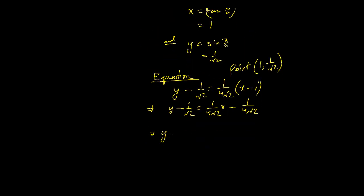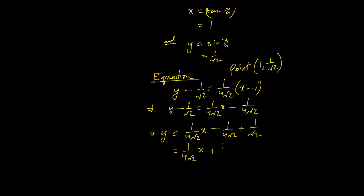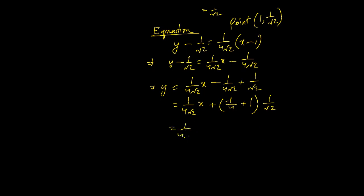So y = (1/(4√2))x − 1/(4√2) + 1/√2. These calculations are simple algebra. If I take 1/√2 common from the constant terms: −1/4 + 1 gives 3/4, so the final answer is y = (1/(4√2))x + 3/(4√2).